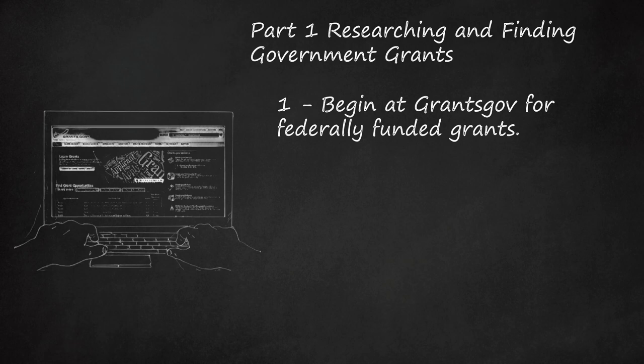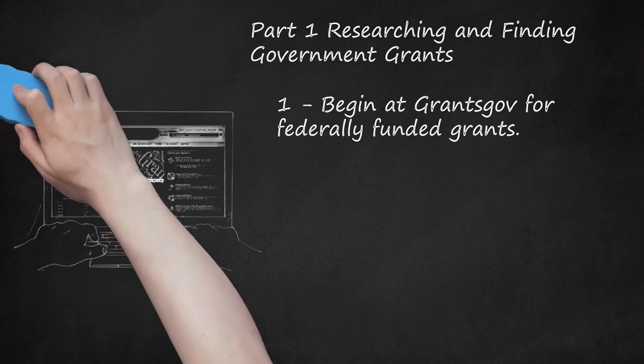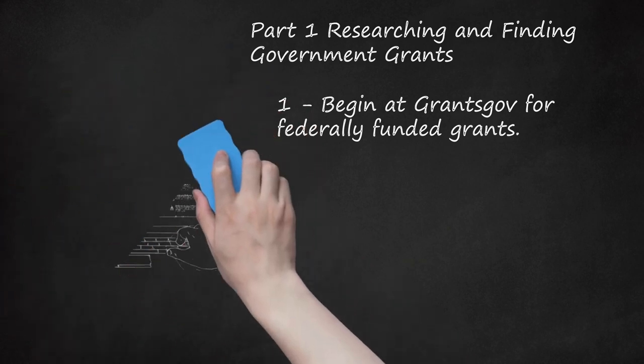At Grants.gov, you can browse grant opportunities by category, such as arts, education, energy, law, or science, or many more. You can browse by federal agency to see which branch of the government is currently awarding grants. Some of the agencies represented include the Department of Agriculture, Department of Commerce, Department of the Interior, Small Business Administration, and many others. You can browse by eligibility. This list includes such categories as independent school districts, individuals, non-profits either with or without 501(c)(3) tax status, or small businesses. By selecting a group that describes you or your organization, you can narrow your search to find grants that may best suit you.